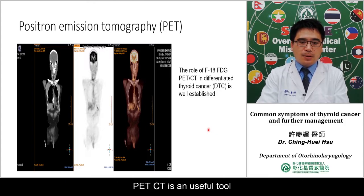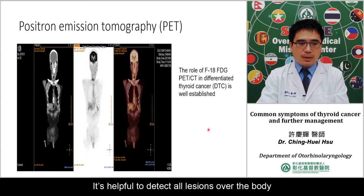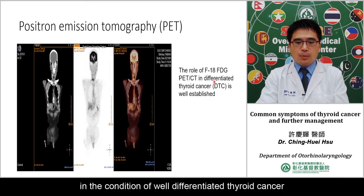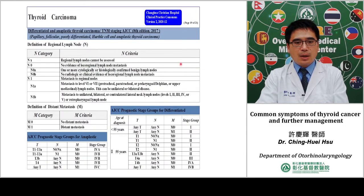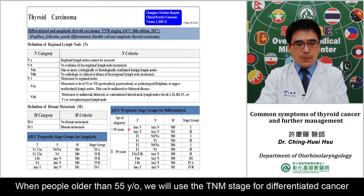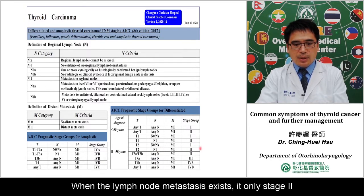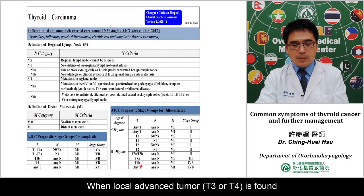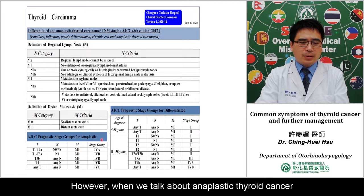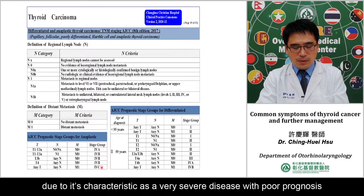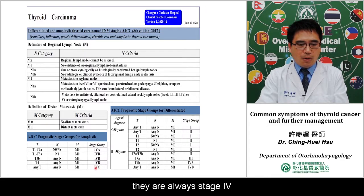PET-CT is a useful tool to detect all lesions throughout the body in well-differentiated thyroid cancer, and we always use PET-CT to check for distant metastasis. For differentiated tumors older than 55, lymph node involvement is stage 2, while local advanced disease may be 4a or 4b. Anaplastic thyroid cancer is always stage 4 due to its severely invasive nature. Medullary thyroid cancer jumps to stage 3 when lymph nodes are involved, and to stage 4c when distant metastasis exists.